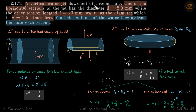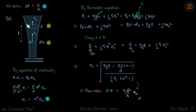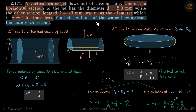A vertical water jet flows out of a round hole. One of the horizontal sections has a certain diameter, and another section located at a different height has a different diameter. We need to find the volume of water flowing through the hole each second. We are given the diameter at one point, the diameter at some other height, and the distance between the two points.